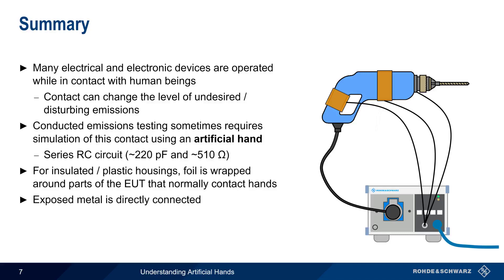Note that in most cases, the RC network simulating the human hand is built into a Line Impedance Stabilization Network, or LISN, and is accessible via a connector on the LISN's front panel. This concludes our presentation, Understanding EMC Artificial Hands. If you'd like to learn more about EMC testing, LISNs, or other EMC-related topics, please see the links in the video description. Thanks for watching.